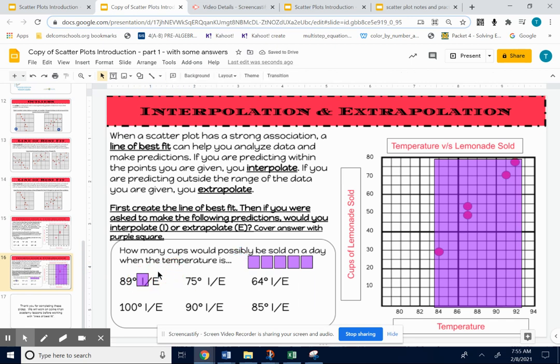75 degrees. See, 75 degrees would be down here somewhere. It'd be outside of that section that has the points. That's called extrapolation.